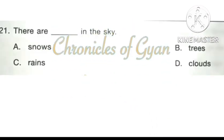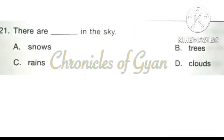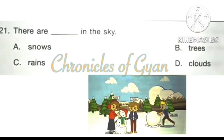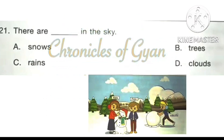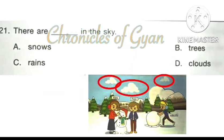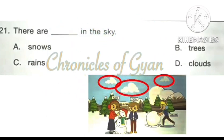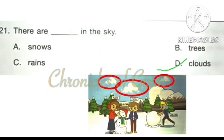Question 21: There are dash in the sky. Looking at the picture, you can see there are clouds. The correct answer is option D: Clouds.